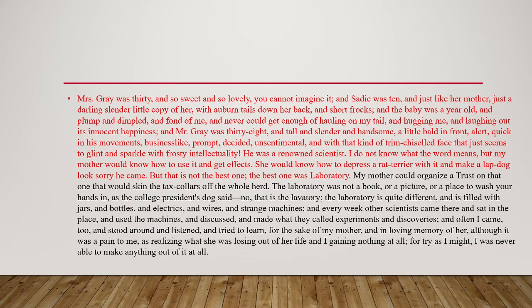Aileen narrates about the Grey family. She met Mrs. Grey, a sweet and lovely woman of 30 years. Mr. Grey was 38 years old, tall, slender, and handsome but not emotional — a scientist by profession. Then there was Sadie, a very lovely girl towards Aileen. One thing specially mentioned by Aileen is the laboratory, which was new to her — filled with jars, bottles, electrical wires, and strange machines. Every week she found scientists coming there, doing experiments and discussing discoveries.